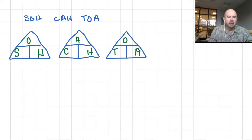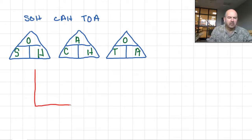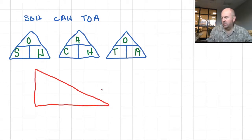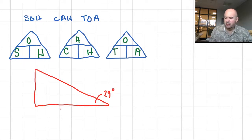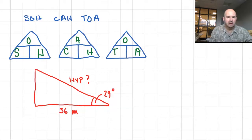So there's our setup. For example, if I had a triangle and I knew the lower angle was 29 degrees and I knew this length was 36 meters, and I wanted to know the length of the hypotenuse — we have the angle and the length adjacent to the angle, so it's the adjacent and the hypotenuse. The only function that fits is the cosine.